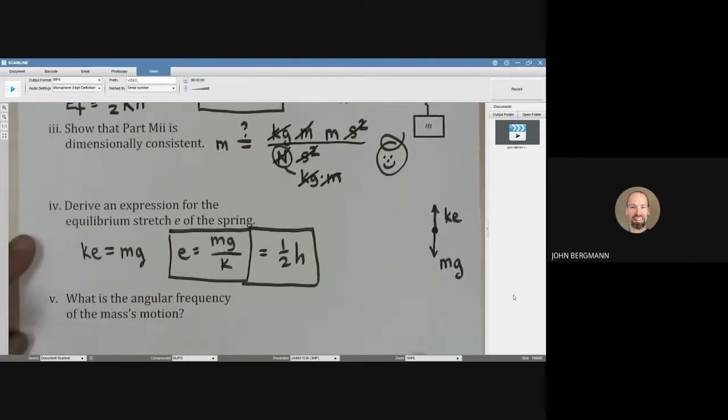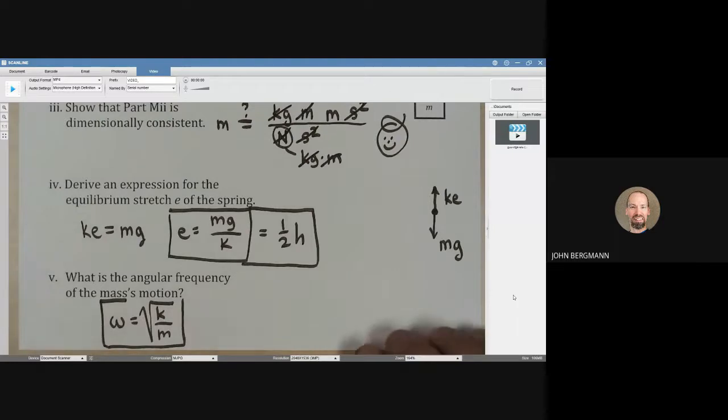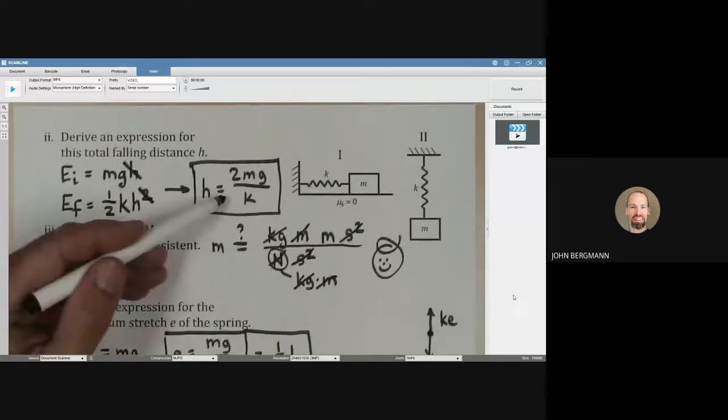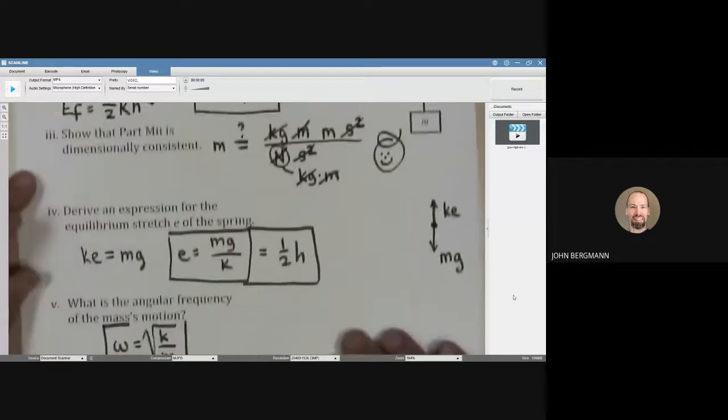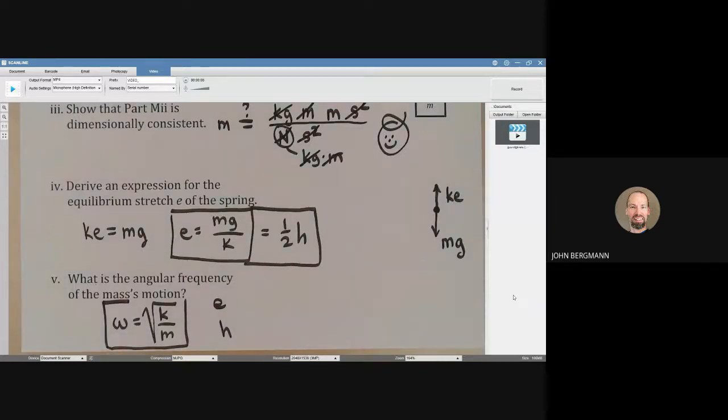And what's the angular frequency of the mass's motion? Well, angular frequency, this is a really important equation: K over M square rooted. That would be one way if they gave us the mass and they gave us the spring constant. If we want, we could substitute something else in here for K. If we're told what the equilibrium stretch is, we could modify this equation that I'm pointing at right now for K and put that in there. We could modify this equation up here for K and we could put that in there as well. So there are several other equations, one of which is in terms of E, one of which is in terms of H, that we could substitute in there. But the basic equation for angular frequency is always going to be that. That's always a good starting point.